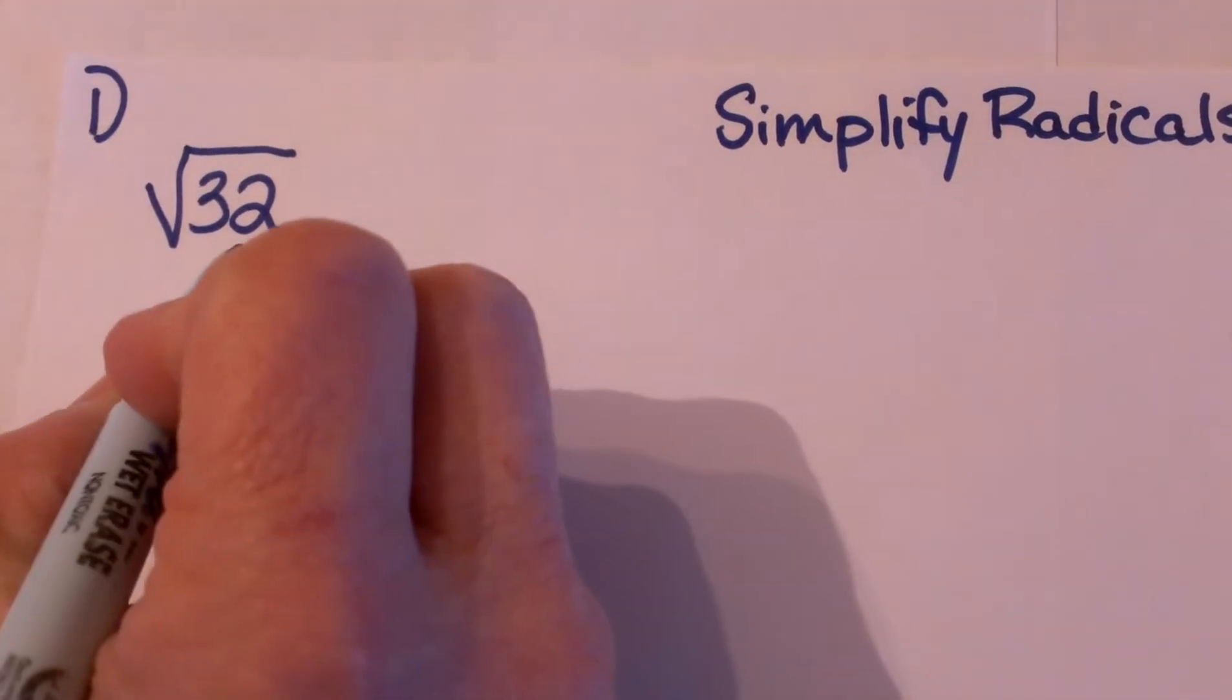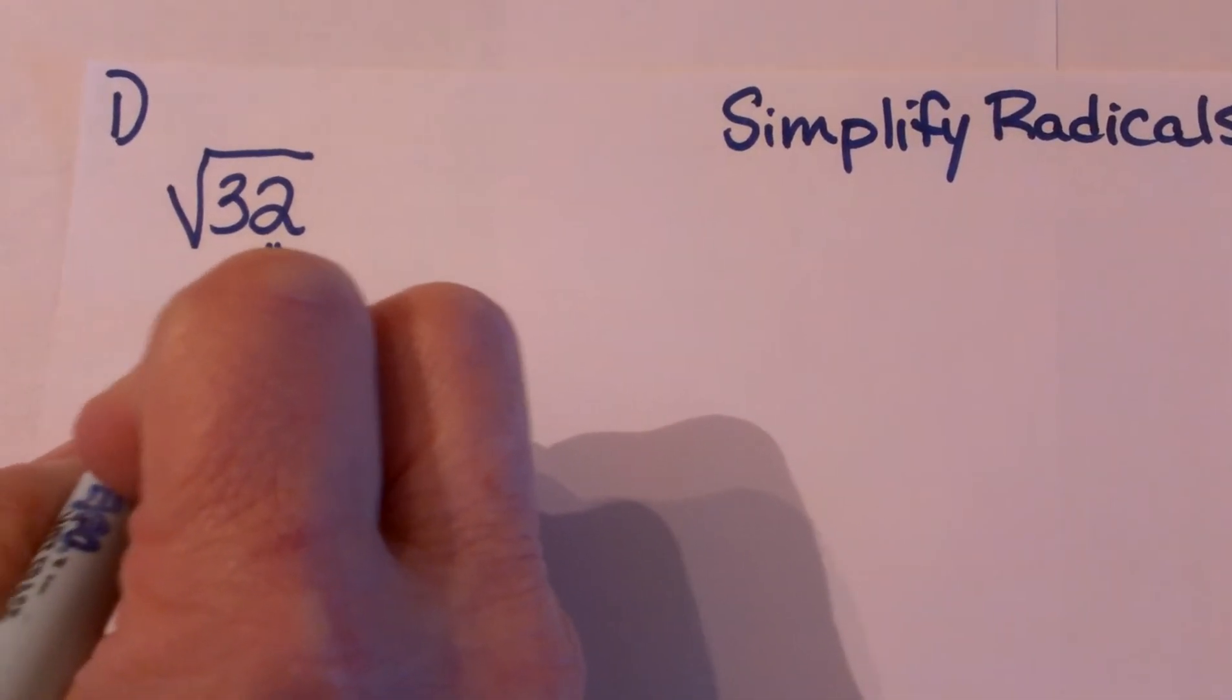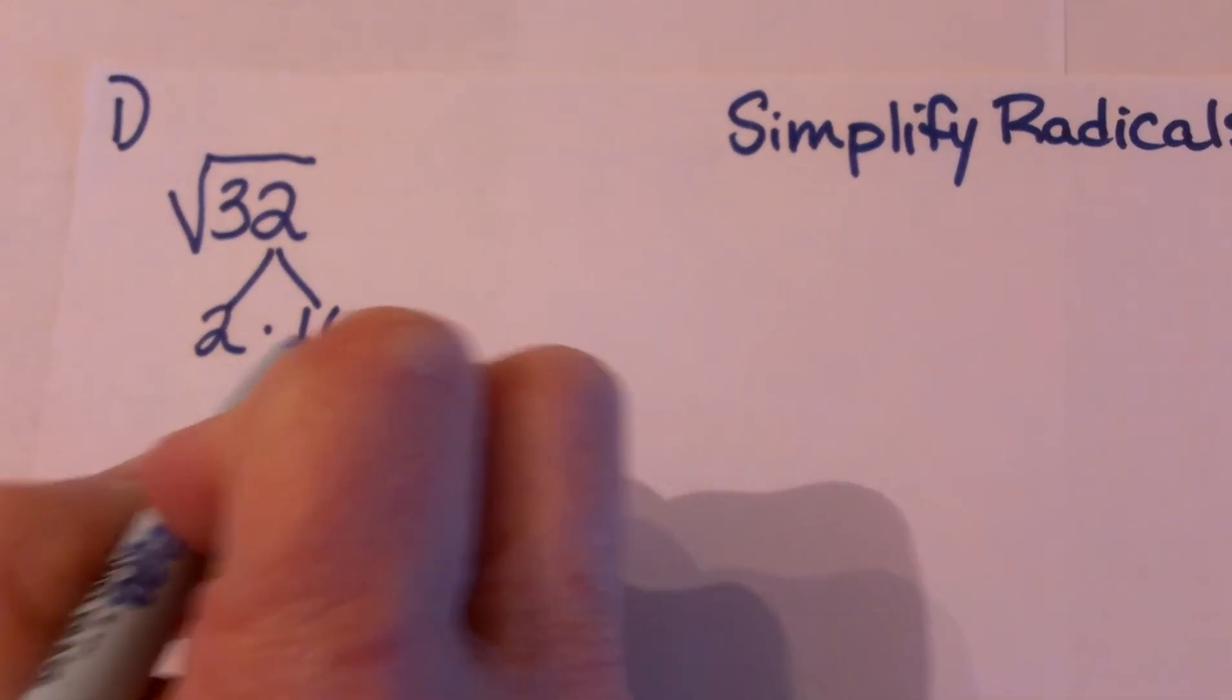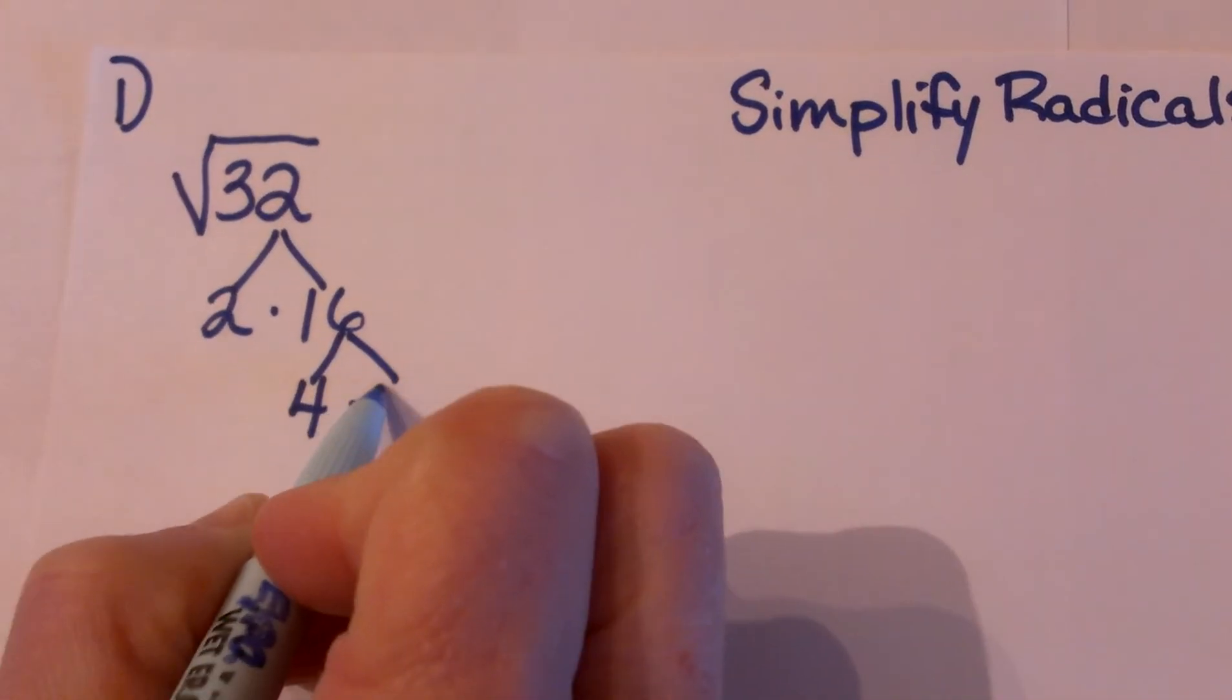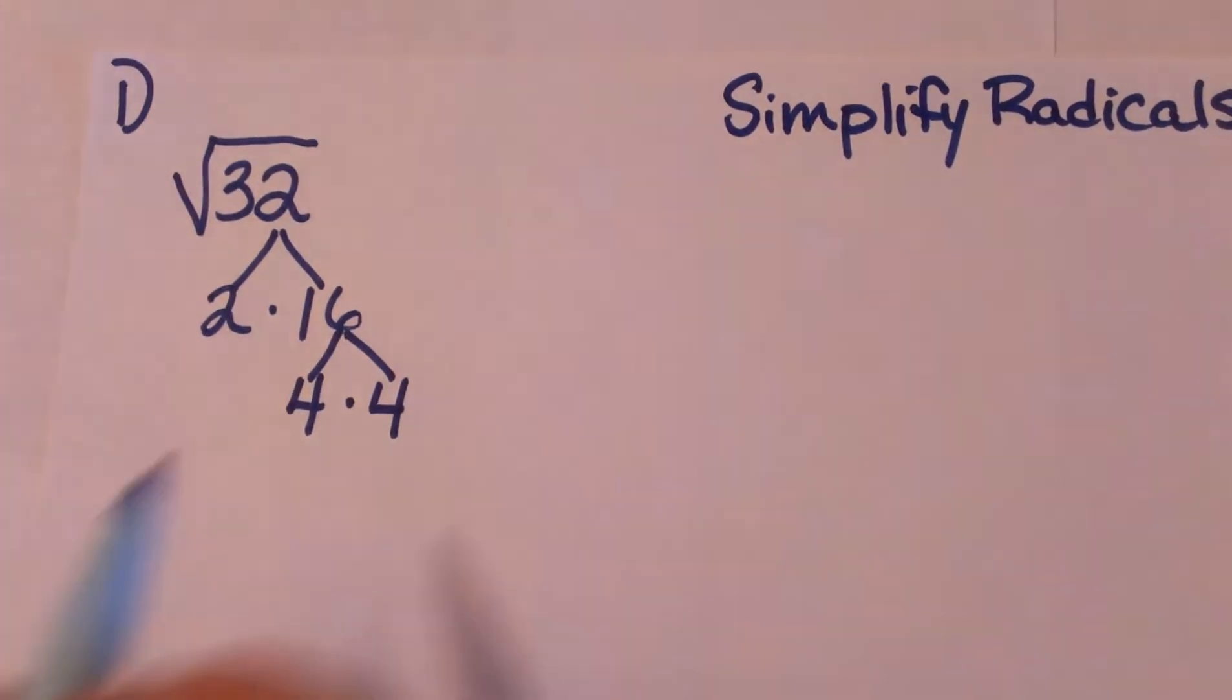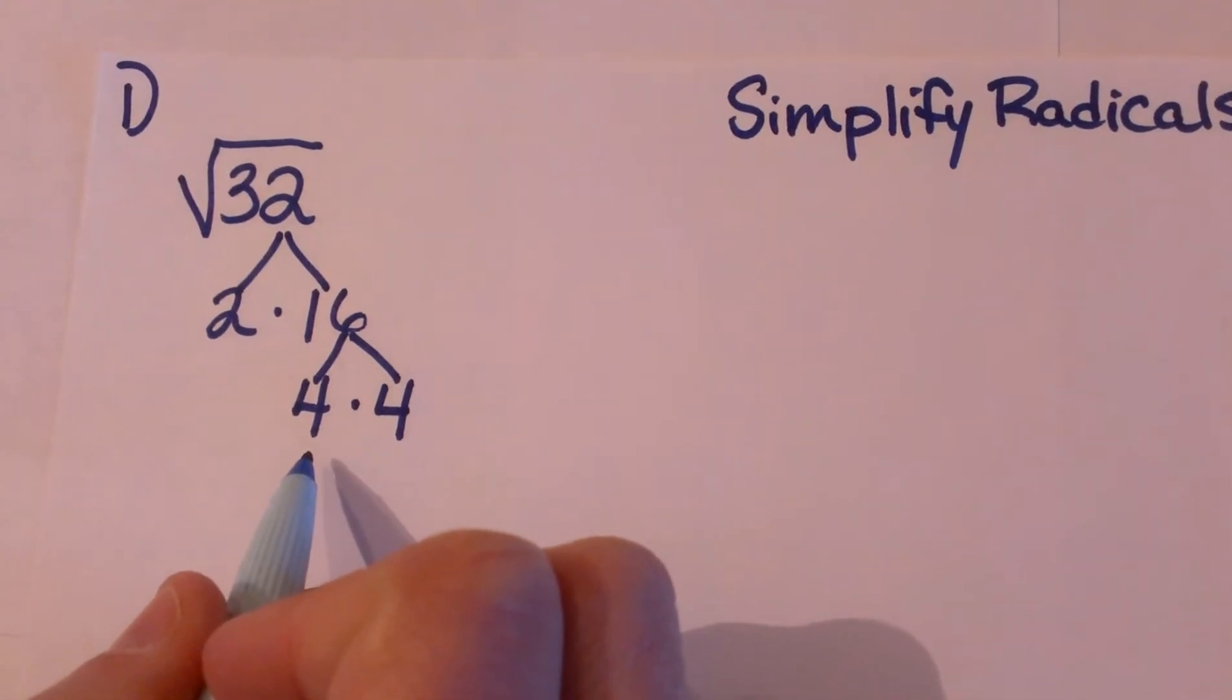Well 32 is not a perfect square so what we are going to start off doing is we are going to make a factor tree. So I know that 2 times 16 is 32 and then 16 breaks down to 4 times 4. Well 4 will break down again but once I find a pair I actually want to stop.